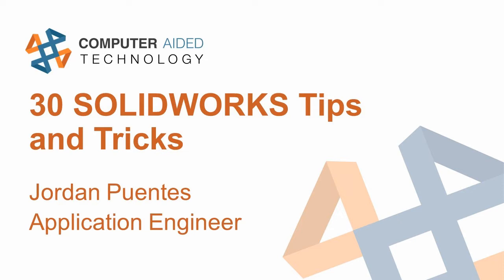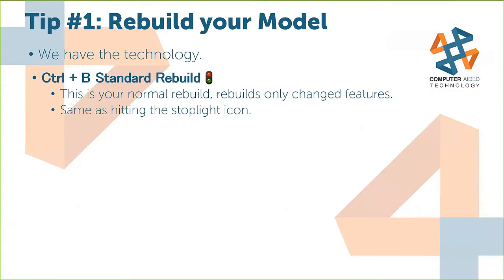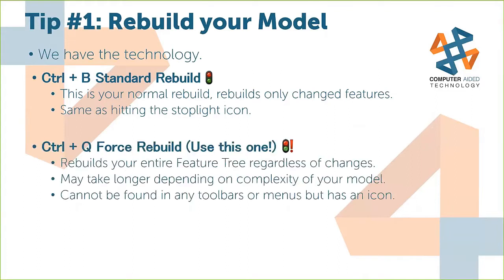Tip number one: rebuild your model. There's a hotkey for rebuild in SOLIDWORKS — Ctrl-B. If you hit Ctrl-B, it's a standard rebuild, the same as hitting that stoplight icon in the top of your SOLIDWORKS menu. A standard rebuild only rebuilds changed features. However, there is another rebuild I recommend: Ctrl-Q, called a forced rebuild.